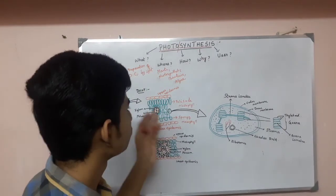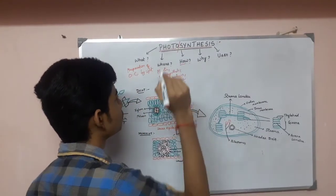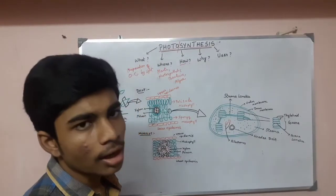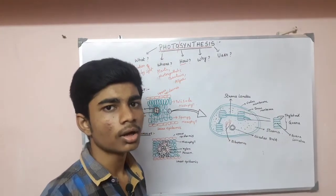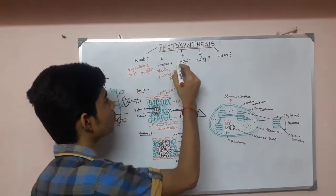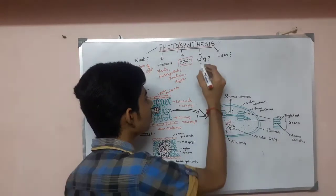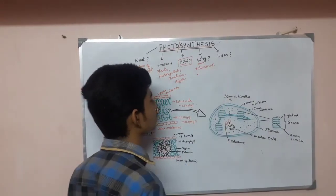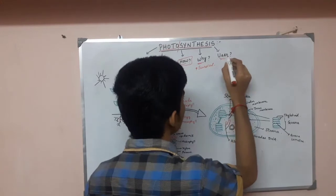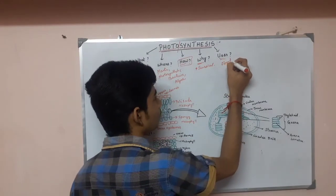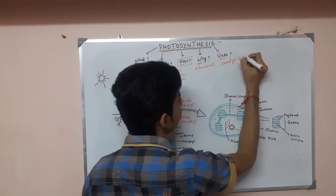These are the organisms in which photosynthesis occurs. How does this photosynthesis occur? This is due to the absorption of light, absorption of CO2, release of O2, and absorption of H2O molecules. Why does this photosynthesis occur? The main reason is survival of the organism, and it is used as food for the living world.